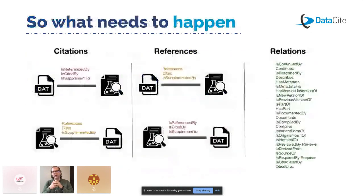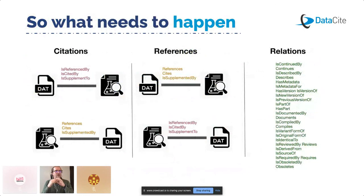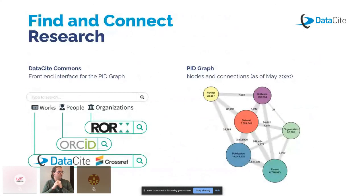To realize the benefits of the PID graph, we need to pay close attention to the relationships in the metadata — specifically citations, references, and the type of relation between identifiers in the metadata. This is really important for building out these connections, and we'll show that in action in a moment. I'll now switch over to Sarala.